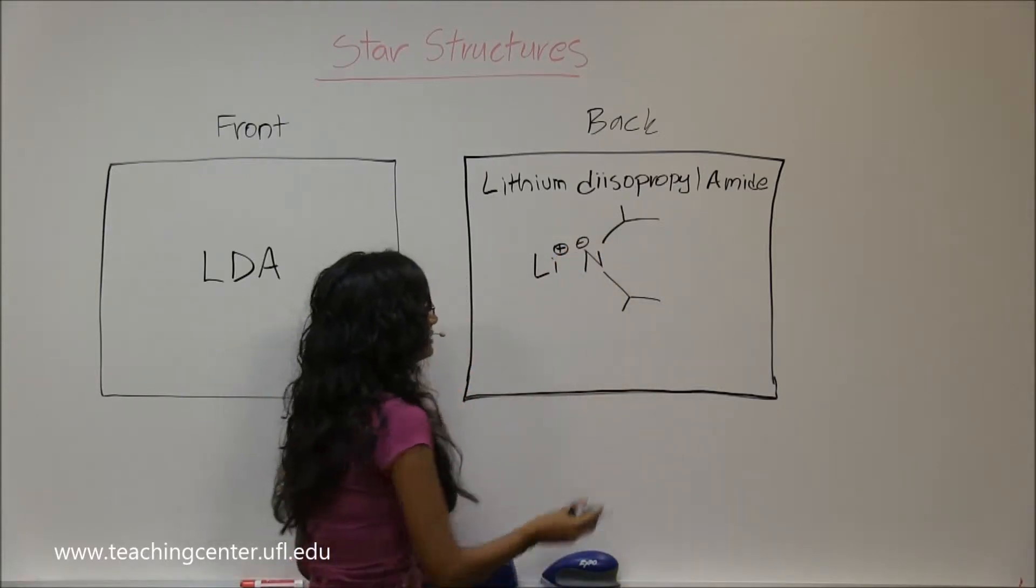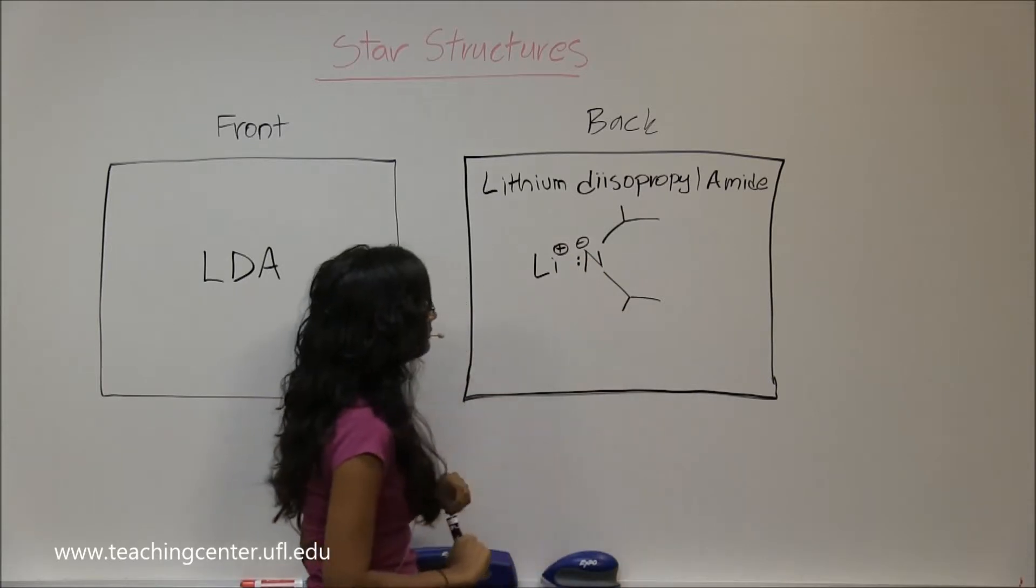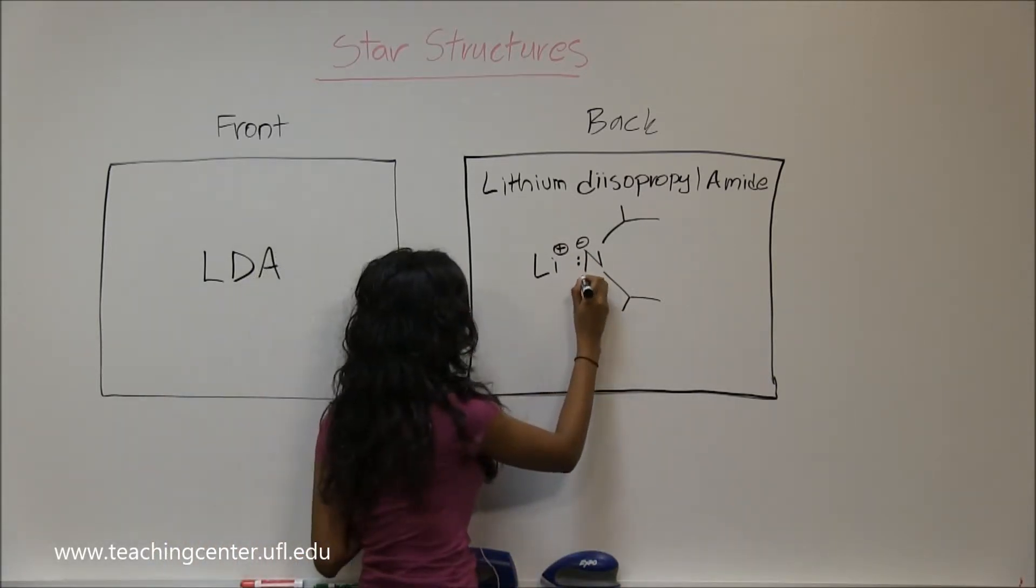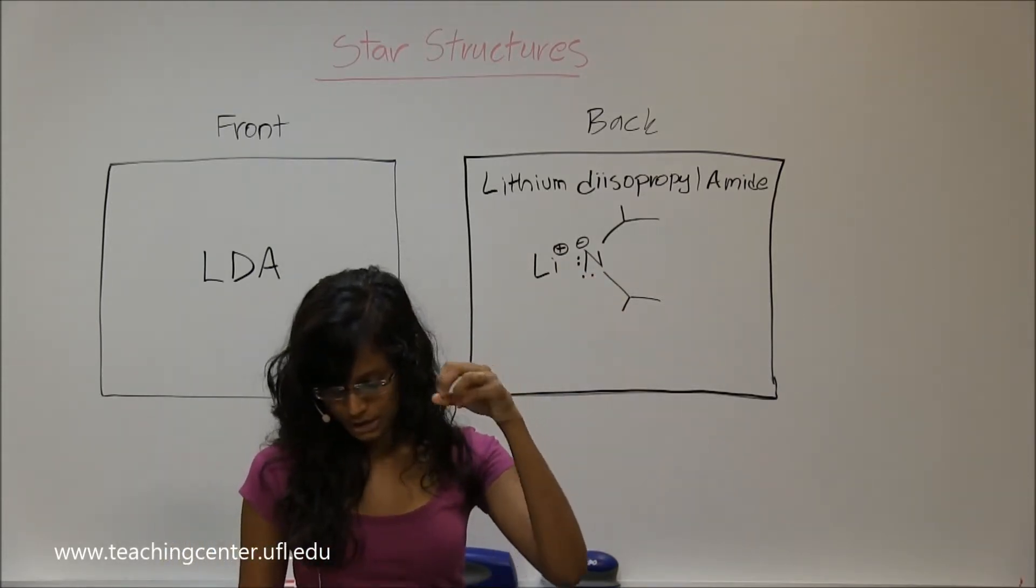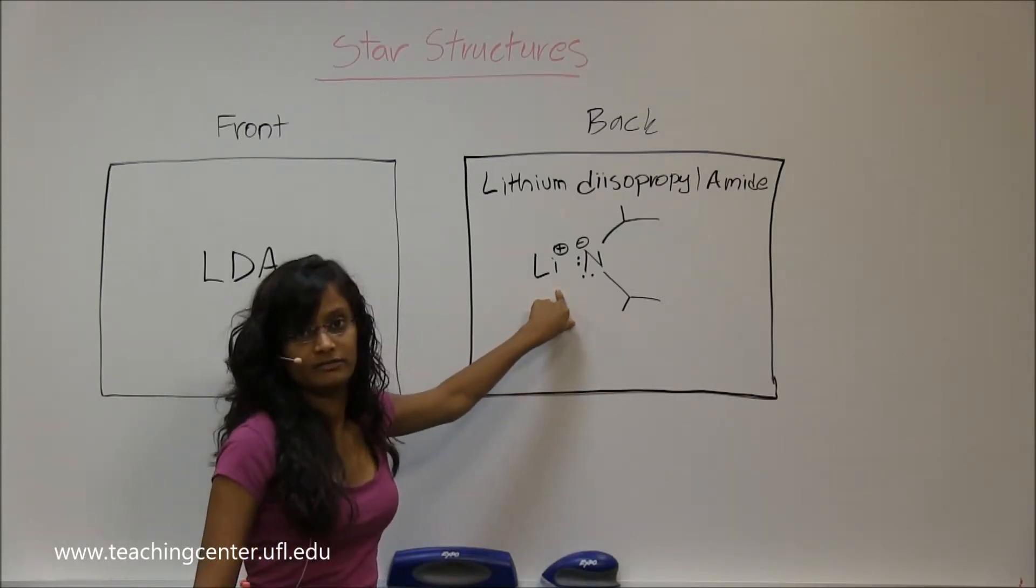If it has the negative charge, it has to have two additional lone pairs. So you have one there and one there. That's why you have that negative charge, and that's why you need the counter ion of lithium.